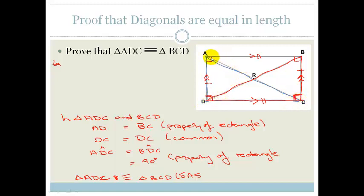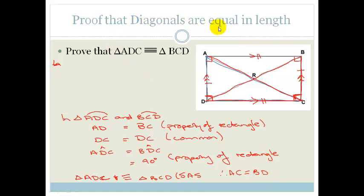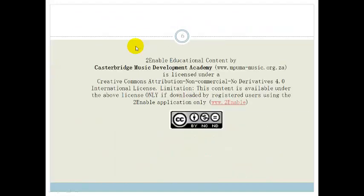So what does that mean? That means the length of AC must equal the length of BD — therefore AC equals BD. We have proven that the diagonals are equal in length. Grade 10s, that is all when it comes to rectangles. You need to learn the properties, be able to recite them, use them, and prove the different properties using congruency.